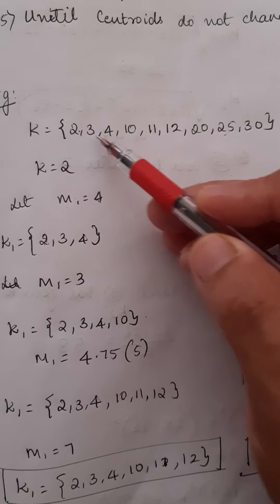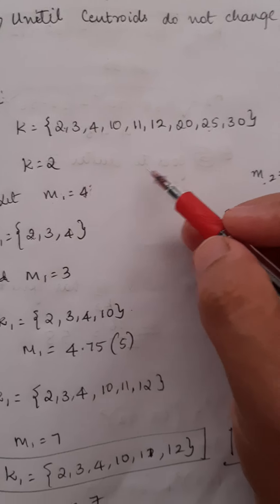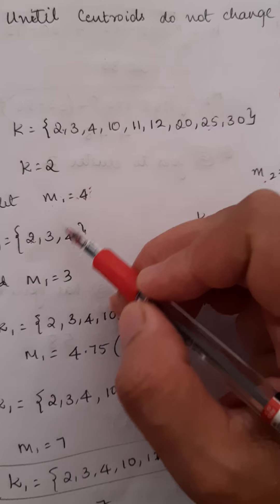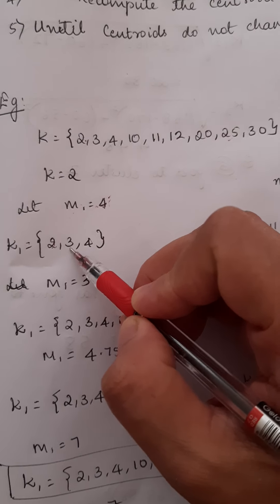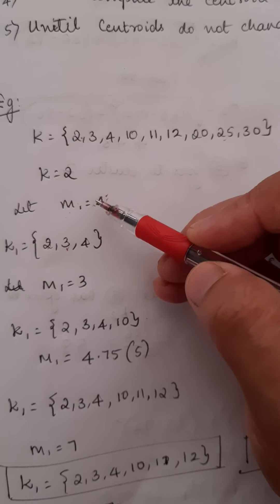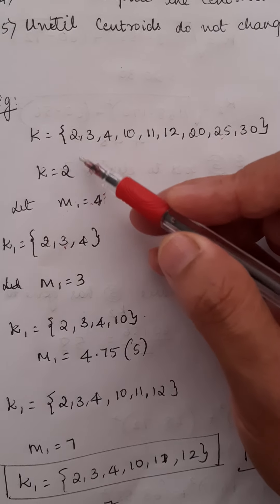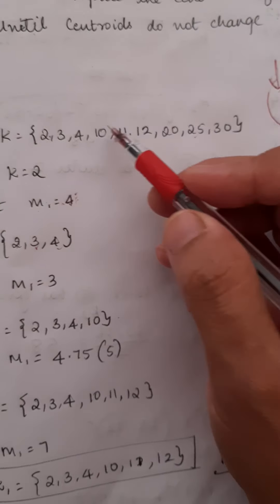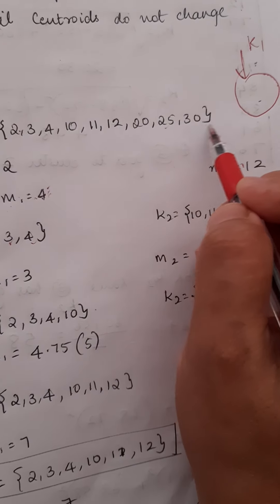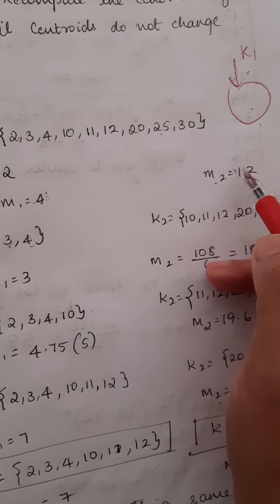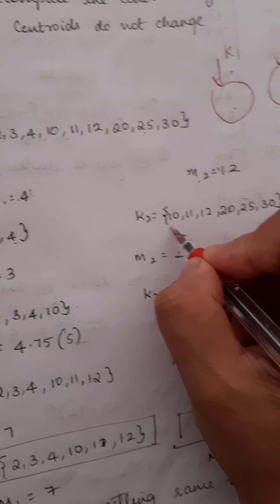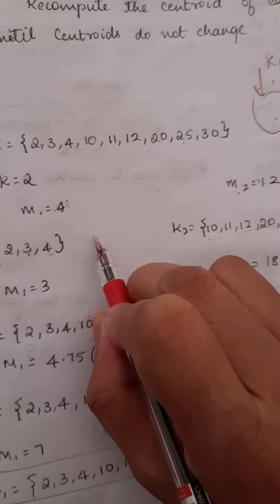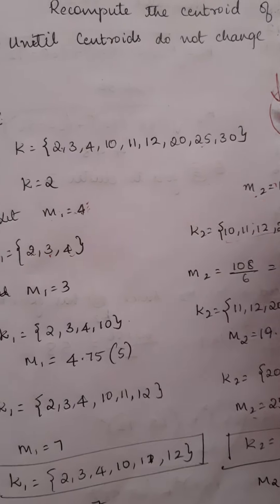The difference between 3 and 4 is 1, whereas 3 and 12 is 9, so 3 has lesser distance and comes into cluster K1. Similarly, 4 is closer to 4, so it comes into K1. From 10 onwards, all numbers are closer to centroid 12, so they go into cluster K2. This completes the first iteration.